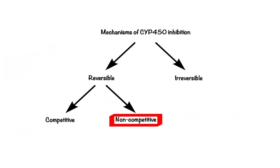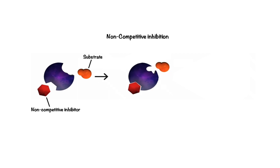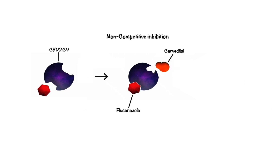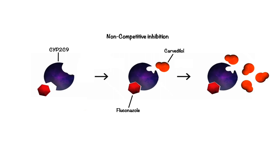Moving on to non-competitive inhibition. Because the non-competitive inhibitor binds to an allosteric site, it typically bears no structural similarities to the substrate. The non-competitive binding causes a conformational change in the active site's structure, which prevents a substrate from binding. As a result, there is no direct competition at the active site between the inhibitor and the substrate. This type of inhibition is typically long-lasting and cannot be overcome by increasing the substrate's concentration. Just like competitive inhibitors, non-competitive inhibitors also have an almost immediate effect. However, unlike competitive inhibition, separating the time of dosing will not alleviate non-competitive inhibition. For example, fluconazole binds to an allosteric site of CYP2C9, causing the active site to lose its affinity for carvedilol. Therefore, concomitant administration will lead to an increase in serum concentrations of carvedilol, increasing the risk of hypotension and bradycardia.